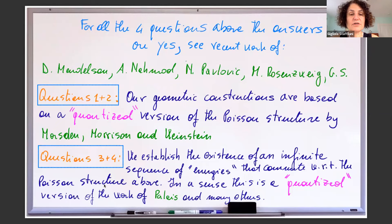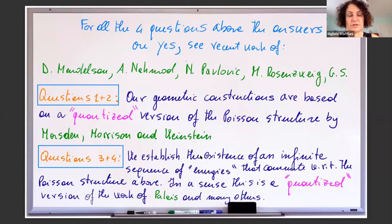These are very long papers, but let me summarize in two lines. For questions one and two — the Hamiltonian structures of both the Gross-Pitaevskii and BBGKY hierarchies and the geometric construction — what we proved is a quantization version of the Poisson structure already described by physicists, in particular Mars, Morrison, and Weinstein. In terms of integrability, we established an infinite sequence of commuting energies or Hamiltonians, again a quantized version of Palais's work for the Schrödinger equation.